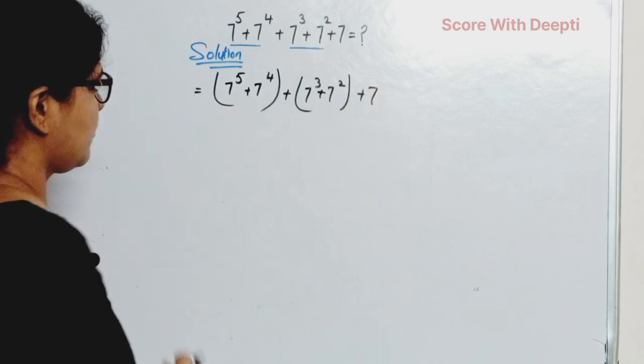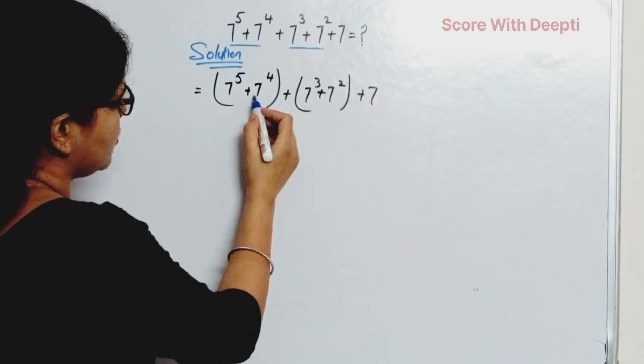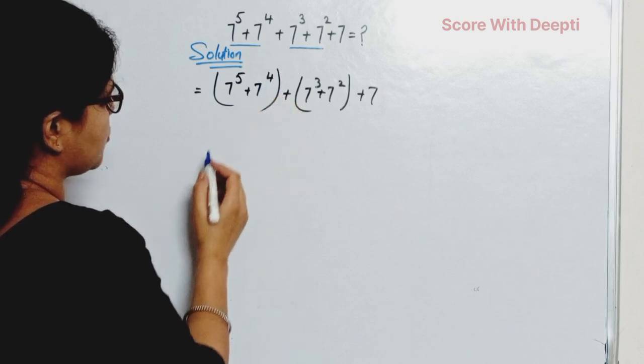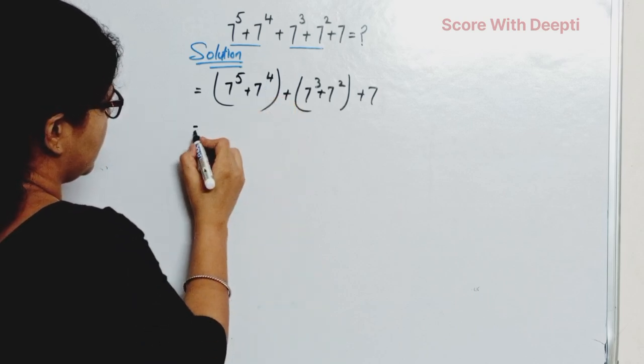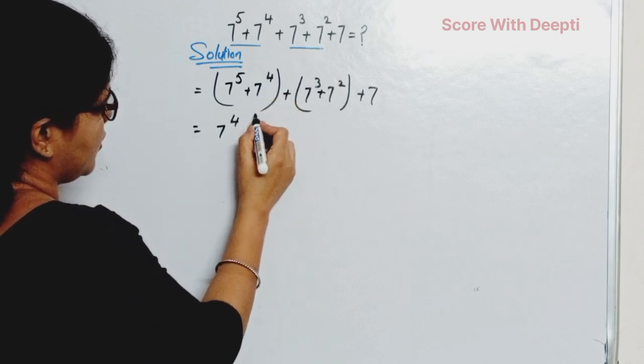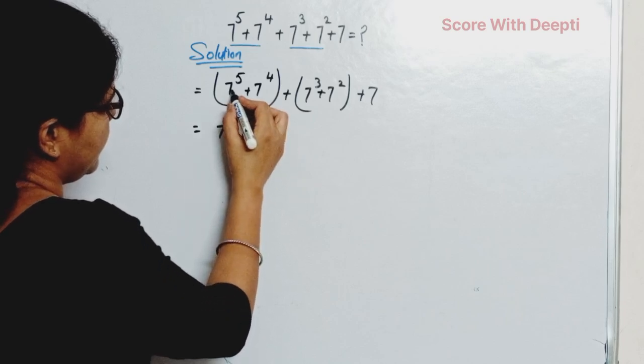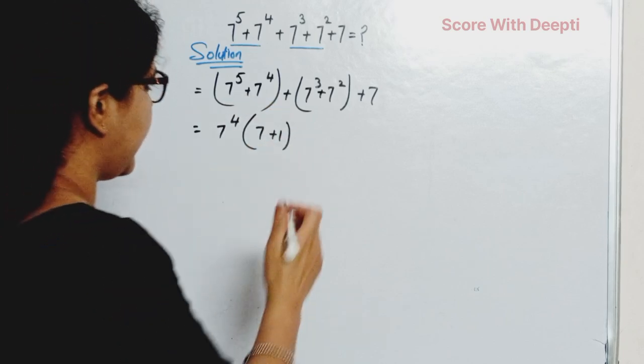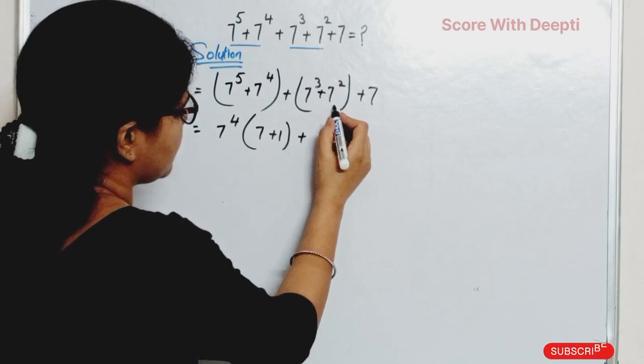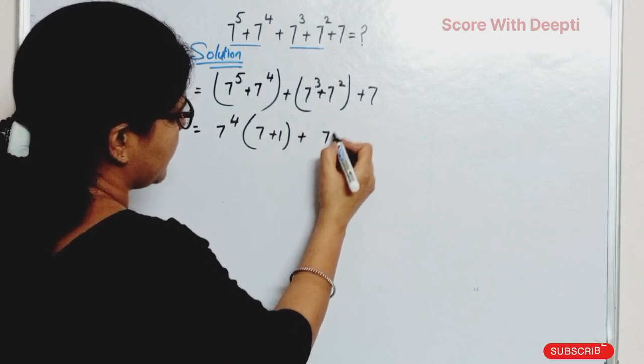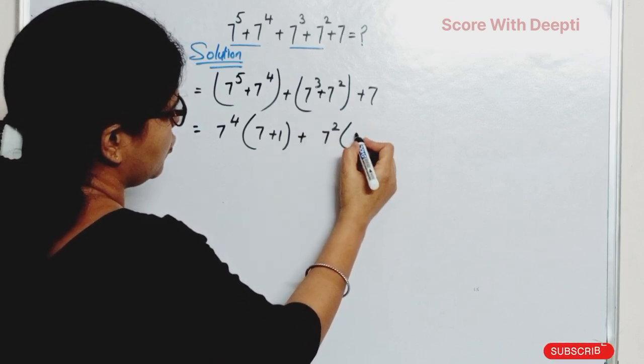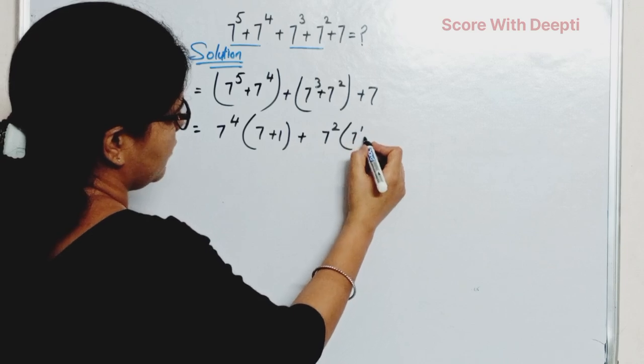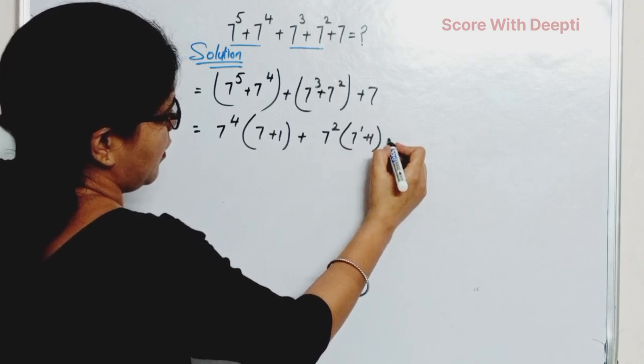Next, here we take out 7^4 as common and get 7^4 * (7 + 1). Next, from this one we take out 7^2 * (7^1 + 1) + 7.